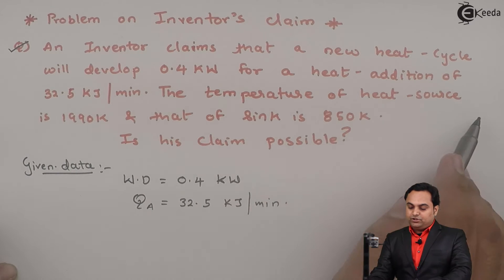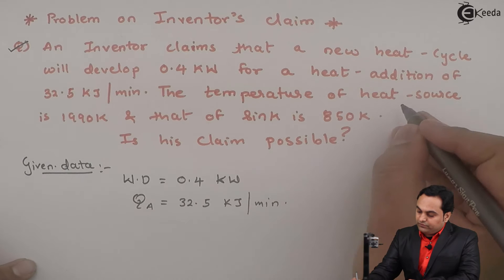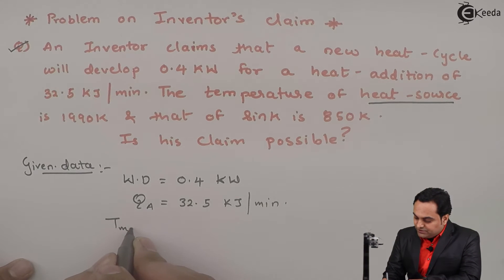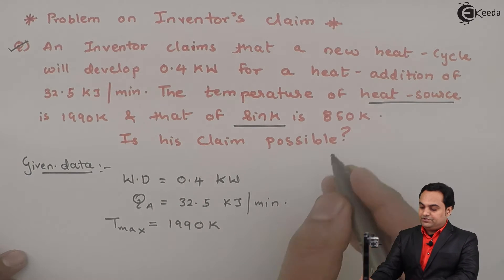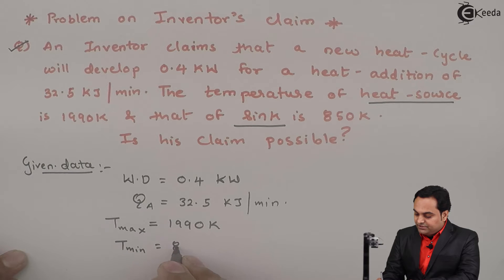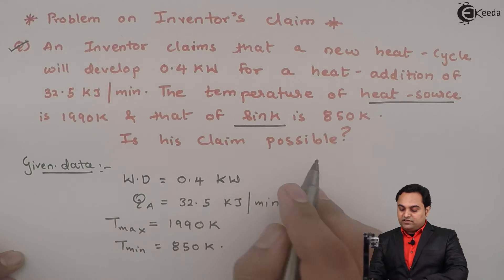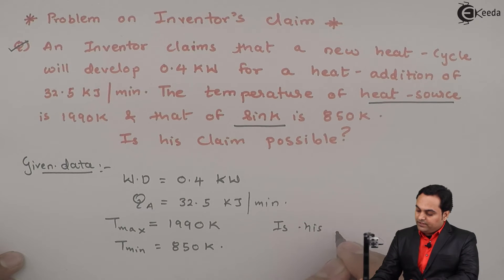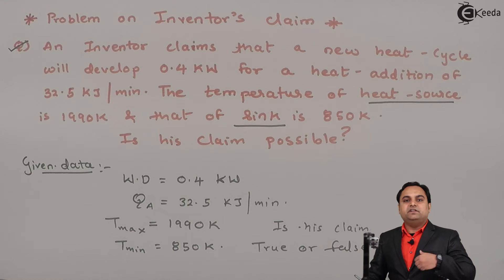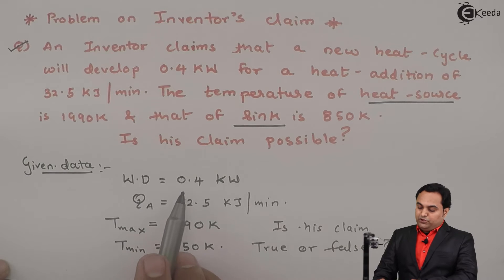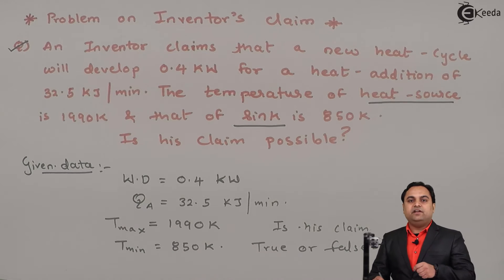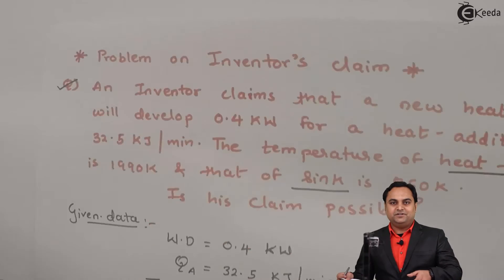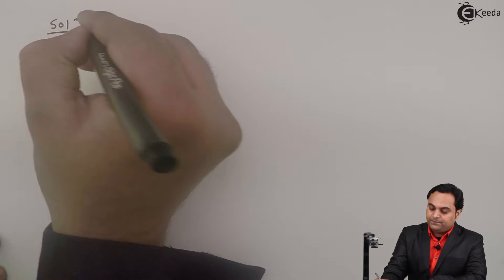The temperature of the heat source is 1990 Kelvin, so T_max is 1990 Kelvin, and that of the sink is the minimum temperature, 850 Kelvin. We have to find out whether his claim is true or false — that is, whether the engine producing 0.4 kilowatt with heat addition of 32.5 kilojoule per minute between these temperature ranges is valid.